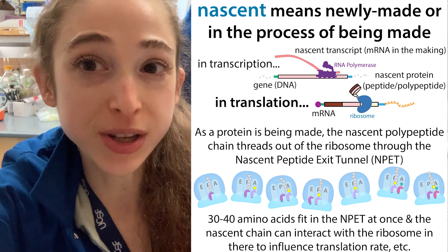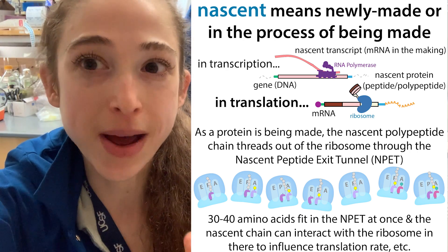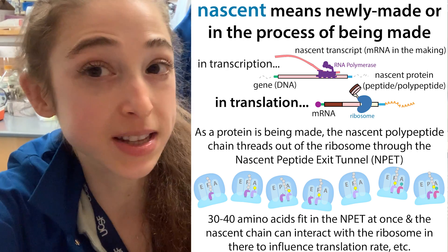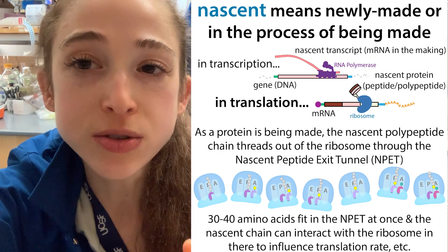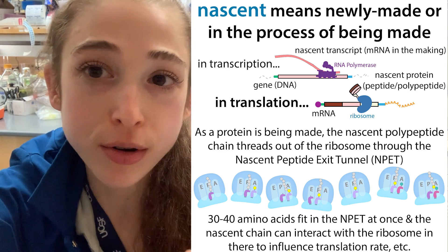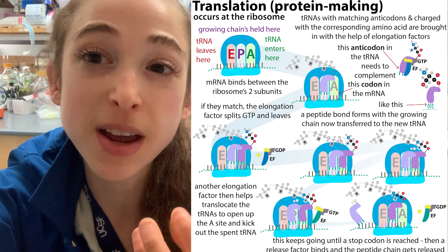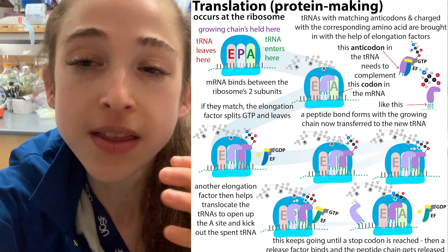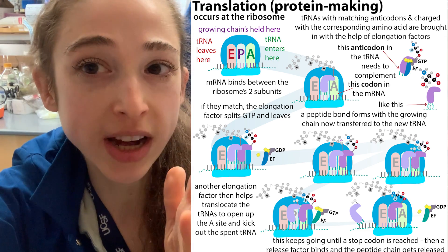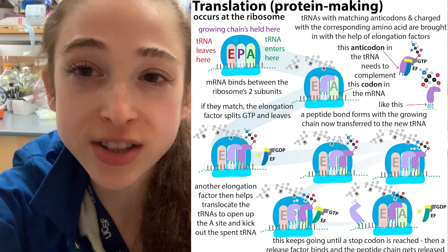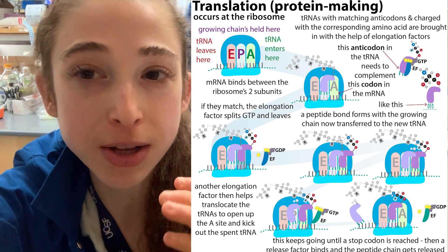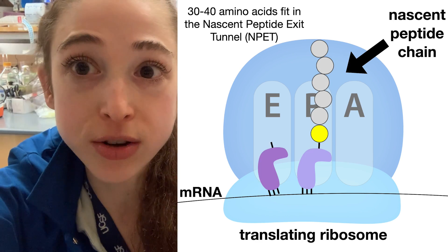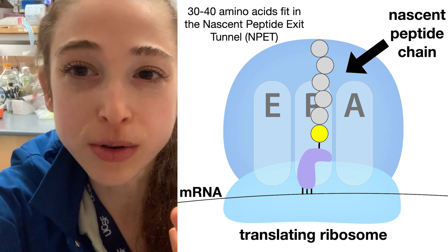Nascent is just a fancy word we use to talk about something that just got made or is in the process of being made. So when we're talking about translation — the process of making a protein — the nascent chain, the nascent polypeptide chain, is the string of amino acids as it's coming out of the ribosome's exit tunnel.